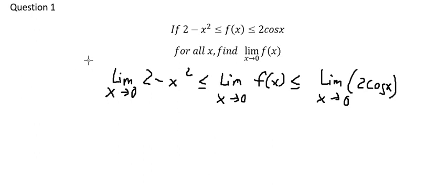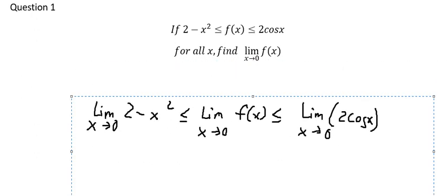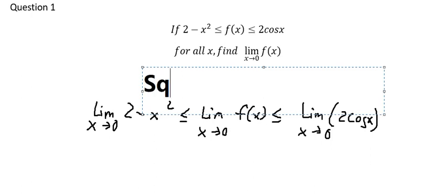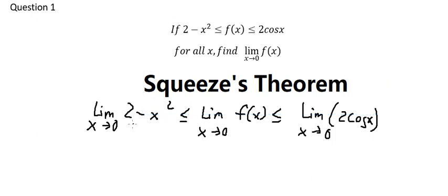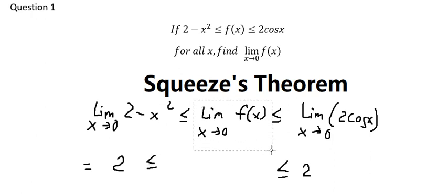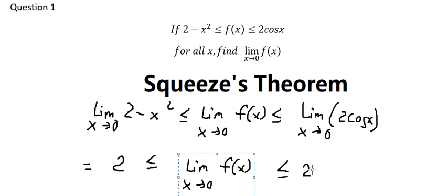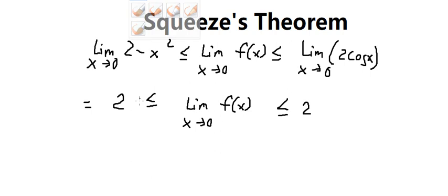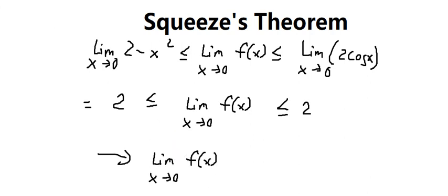We know that this is the squeeze theorem. So when s approaches zero, we put zero in here, and we get number two. We put zero in here — cosine of zero gives one, and one times two gives number two. We can see that the limit on the left and the limit on the right both equal two. So the limit of this function equals two. That is the answer for question number one.